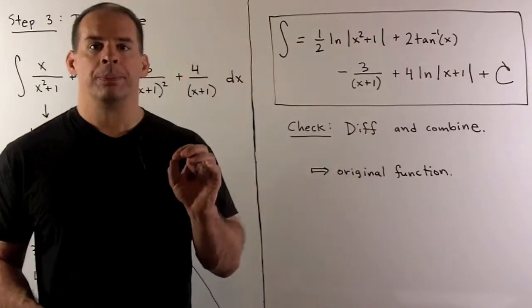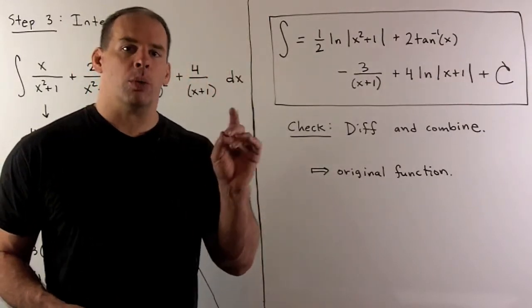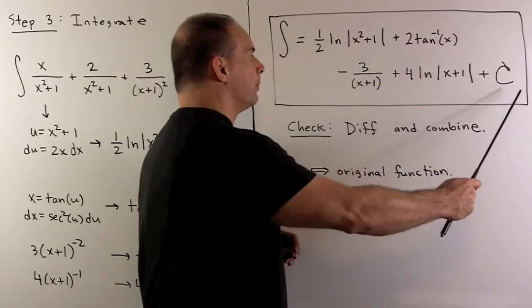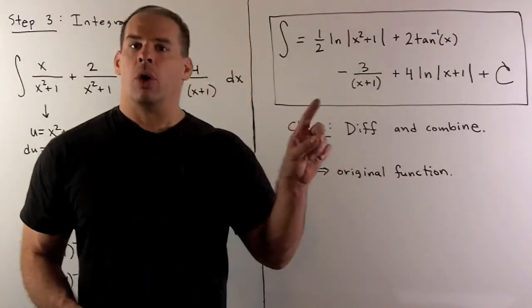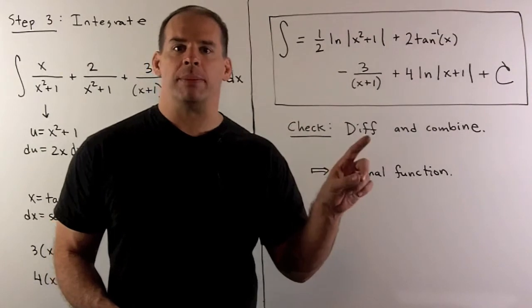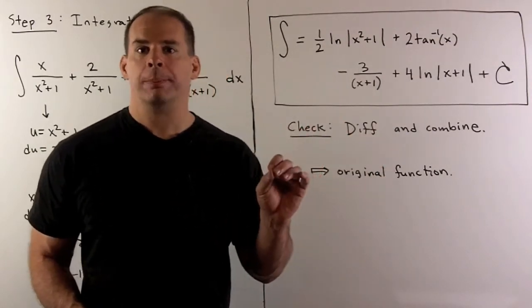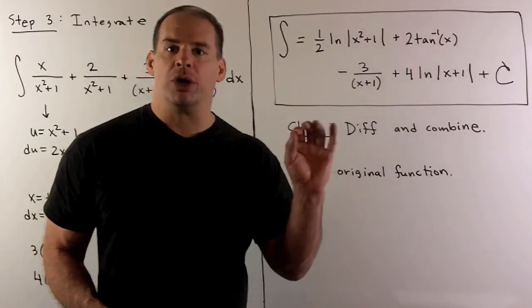Of course, you check your work. We won't do this here, but what would you do? We would take the derivative of our answer. That will give us, hopefully, our partial fraction expansion back. We combine all our terms, put them over our common denominator. Then we have to check that we get our original function back.